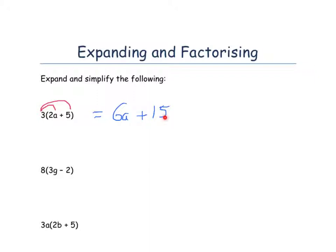Next, 8 in brackets 3g minus 2. We're going to multiply 8 by everything inside the bracket. So 8 times 3g: 8 times 3 is 24, so 24g. And 8 times 2 is 16, but it's minus 2, so it's going to be minus 16.